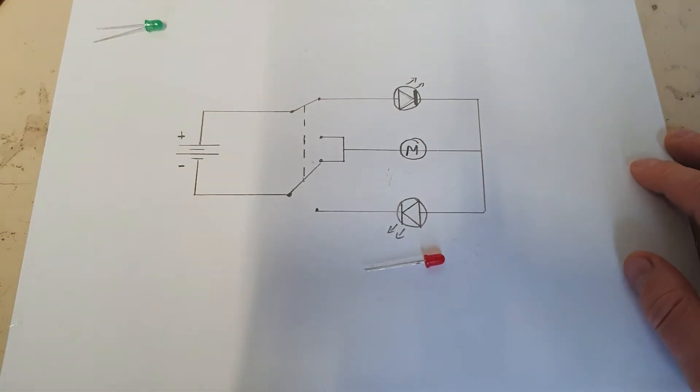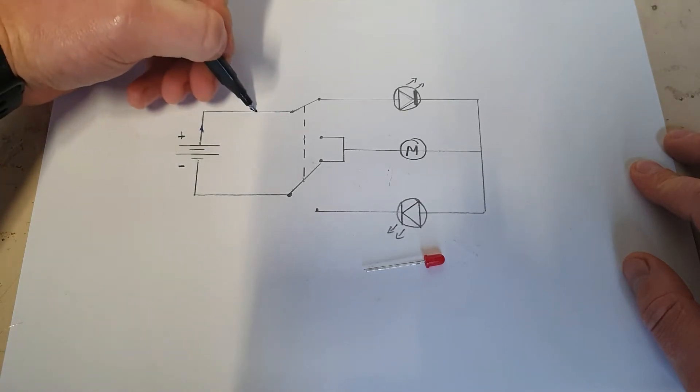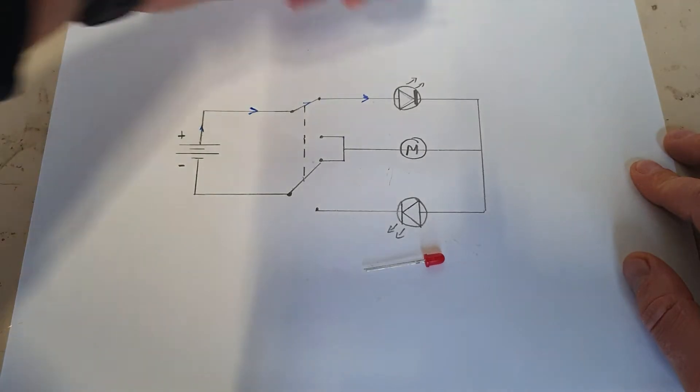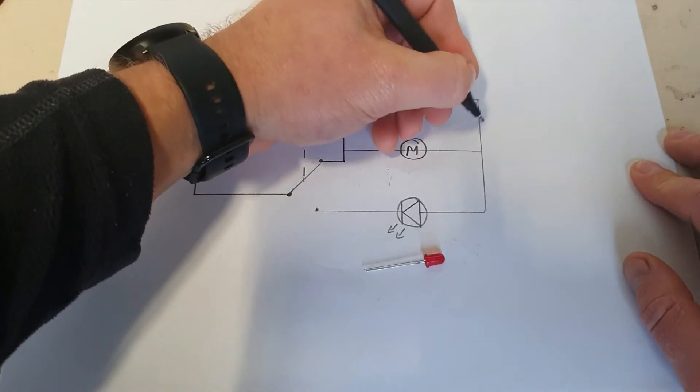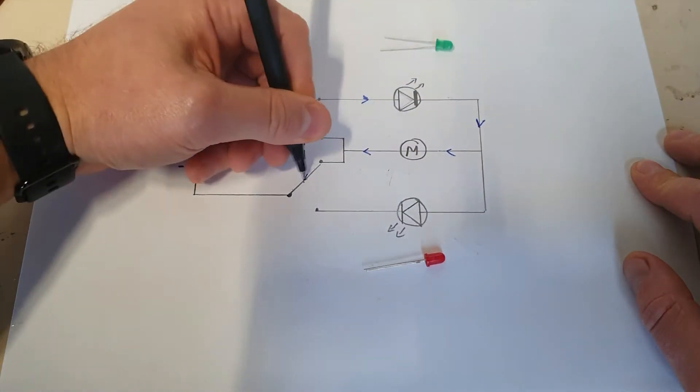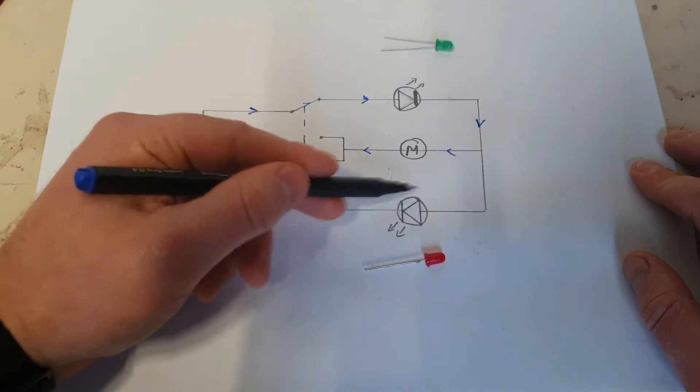If we remember our current flow in this position, in one direction it's going to come up like this, through here, through the LED. This is going to be our green LED in our circuit, and it's going to go all the way through the motor this direction and back to negative. Nothing is going near this red LED.